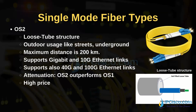OS2 is the other single-mode fiber optic cable. It has a loose tube structure. OS2 cables are used outdoors — streets, underground, etc. The maximum distance for this type is 200 kilometers. OS2 supports gigabit and 10G ethernet links and also supports 40 gigabit and 100 gigabit ethernet links. On attenuation, OS2 outperforms OS1. The price of OS2 is higher than OS1.